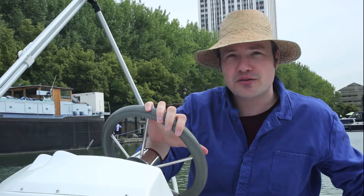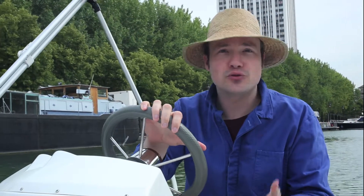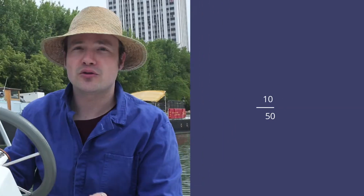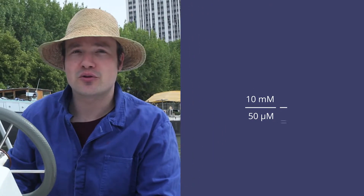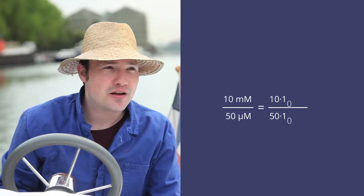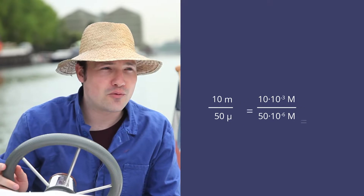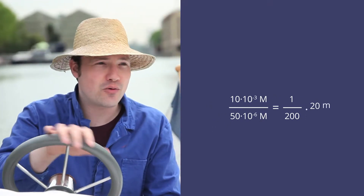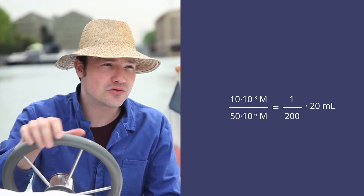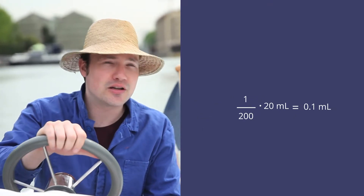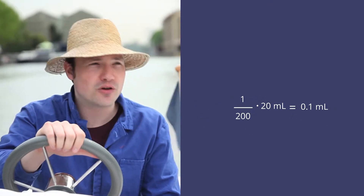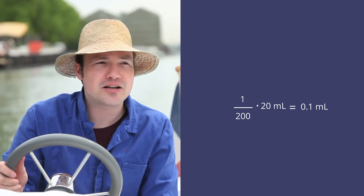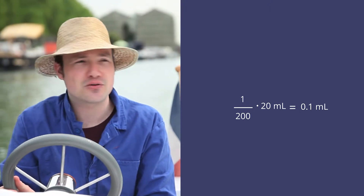Another way to think about this calculation is to focus on the dilution factor. I start with 10 millimolar and I want to go to 50 micromolar, so that means I want a one-to-two-hundred dilution. The final volume I want is 20 mils, so 20 divided by 200 is 0.1 mils. For some people, breaking the calculation into two steps like this just makes the arithmetic easier.